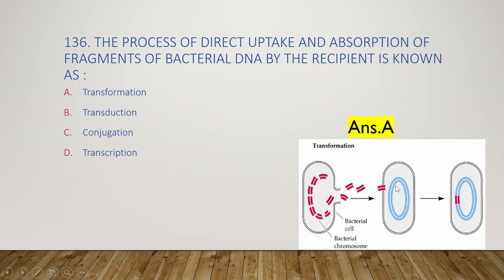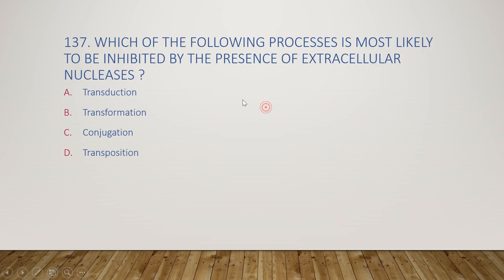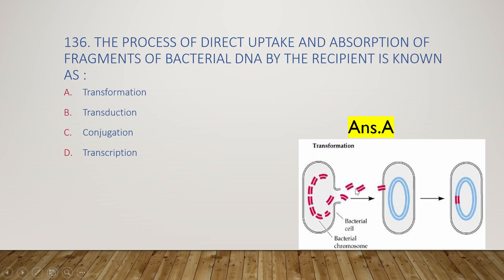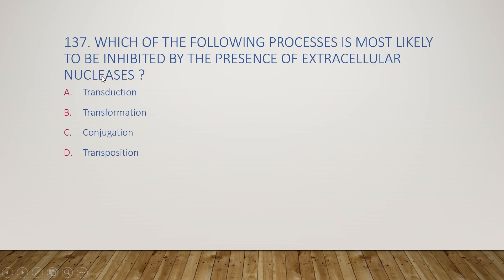The next question: which of the following processes is most likely to be inhibited by the presence of extracellular nucleases? Options are transduction, transformation, conjugation, or transposition. The right answer is option B, transformation, because naked DNA can be destroyed by nucleases.